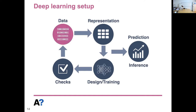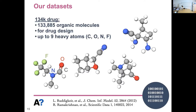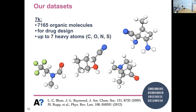Let's look at the input data we used for our models. We used two different datasets: a dataset of 134,000 organic molecules typically used for drug design, and then a smaller dataset of similar structure. The reason we had a large and a small dataset was to check whether these models can also perform with smaller datasets.